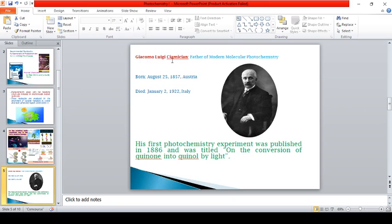Giacomo Luigi Ciamician is known as the Father of Modern Photochemistry. He was born in Austria in 1857 and died in Italy in 1922. His first photochemistry experiment was published in 1886 and was titled On the Conversion of Quinone into Hydroquinone by Light.